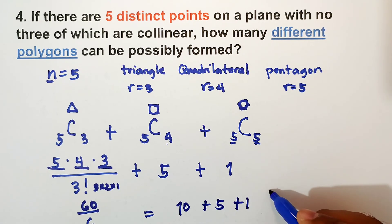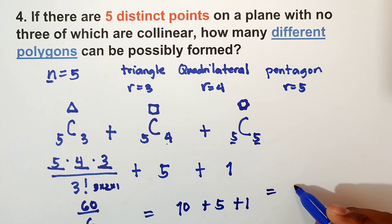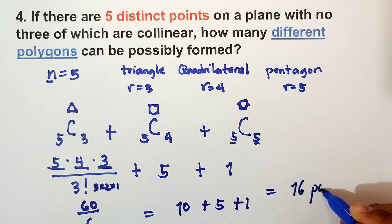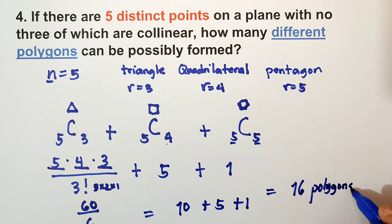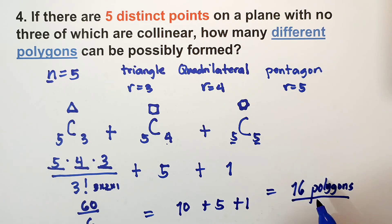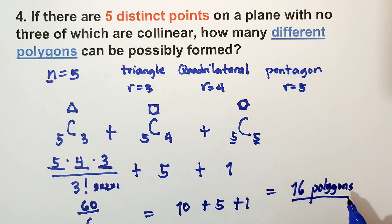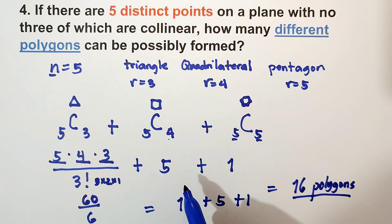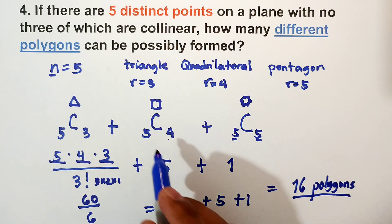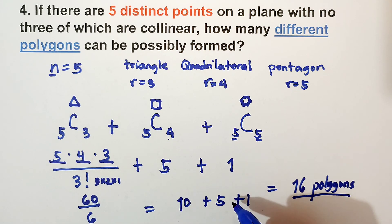Therefore, there are sixteen polygons using five distinct points: ten triangles, five quadrilaterals, and one pentagon.